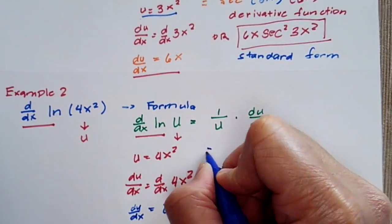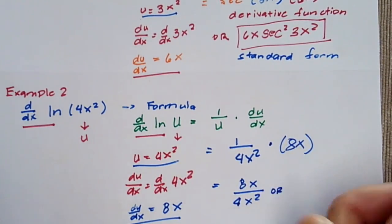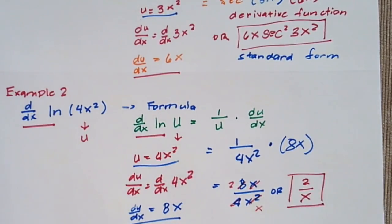Plugging it into the formula, you'll have 1 over 4x squared times 8x, or by simplifying your fraction, it's going to be 2 all over x.